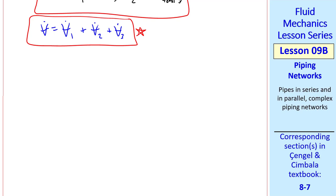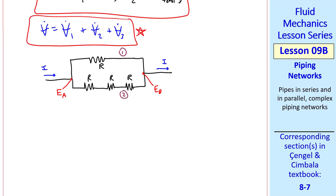There's an analogy with electrical circuits, with which you may be more familiar. Suppose we have this circuit with current I flowing, and for simplicity, let's let all these resistors be the same. The voltage potential at the two junctions is Ea and Eb, and let's call this branch 1 and branch 2.